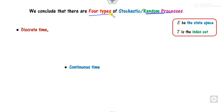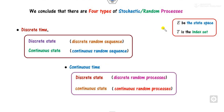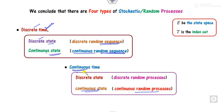We can classify the stochastic random process into four types depending on the nature of E and T. If T is discrete and E is discrete, we call it a sequence. If both T and E are continuous, we call it a continuous random process. If T is discrete and E is continuous, we call it a continuous random sequence. If T is continuous and E is discrete, we call it a discrete process.